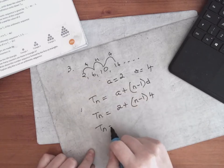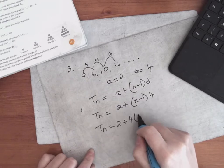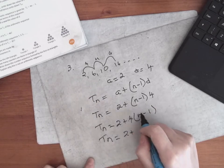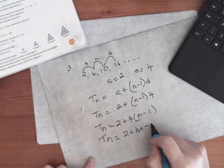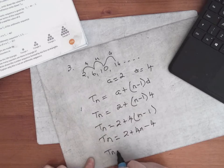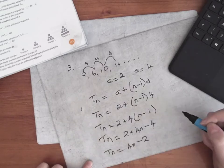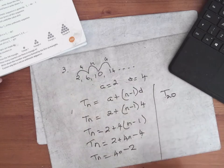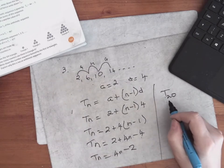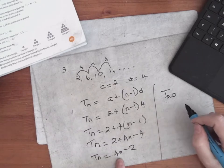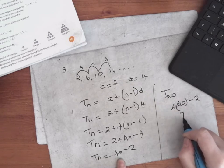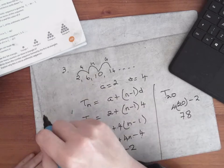Put the 4 in front of the bracket — you don't have to, you can multiply out, but just so you know what I'm doing. Multiply it out and tidy it up: tn is 2 plus 4n minus 4, so tn equals 4n minus 2. Then the second bit of part three asked me to find t20 — so everywhere I see an n I put in 20, so it's 4 times 20 minus 2, which is 78.